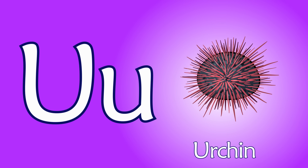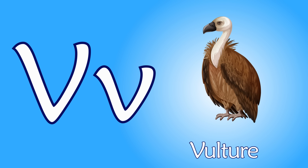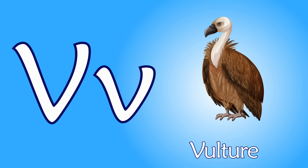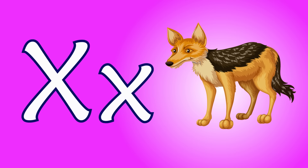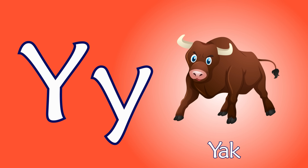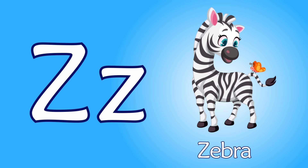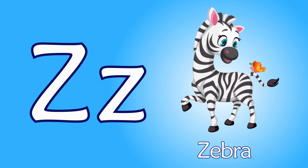U is for Urchin, U-U-Urchin. V is for Vulture, V-V-Vulture. W is for Wolf, W-W-Wolf. X is for Fox, X-X-Fox. Y is for Yak, Y-Y-Yak. Z is for Zebra, Z-Z-Zebra.